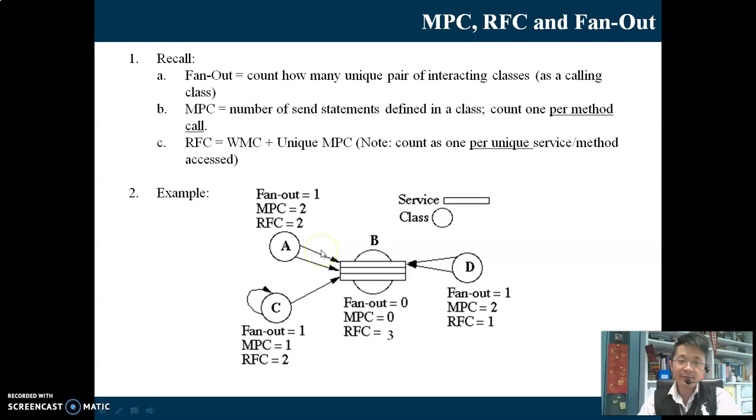MPC can be quite easily determined by counting the number of outgoing arrows. The outgoing arrow indicates a method call. There are two method calls here. Therefore, MPC is 2. RFC is the total of the number of methods within that particular class. In this case, zero methods inside Class A and the unique MPC. We have two MPCs. Thus, 0 plus 2 gives us 2.